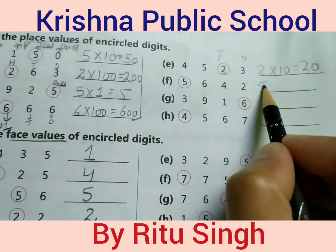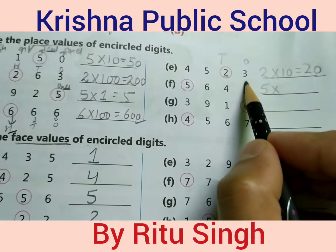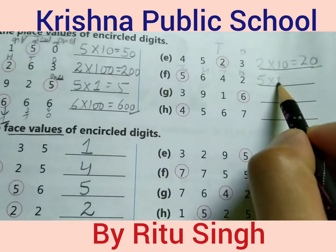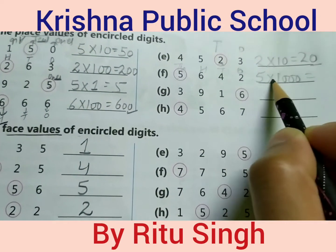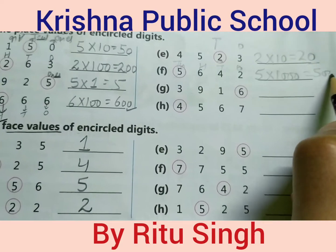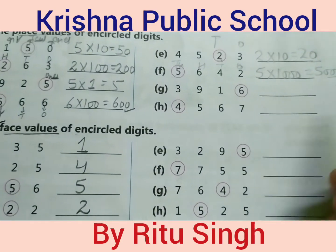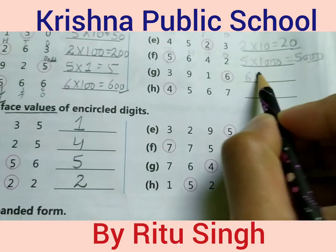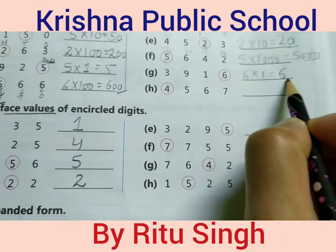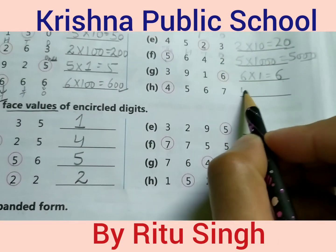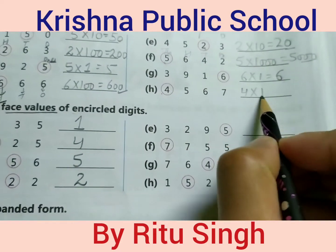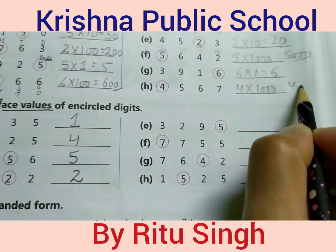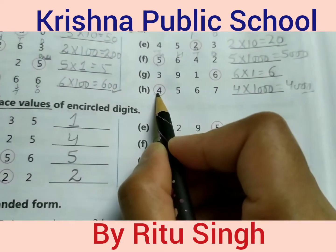Write 5 into its place — the place is thousands. Write 1000. 5 into 1000 equals 5000. This is the place value of digit 5. Write 6 into ones place — 6 into 1 equals 6. This is the place value of digit 6. Write 4 into its place — the place is 1000. 4 into 1000 equals 4000. This is the place value of digit 4.